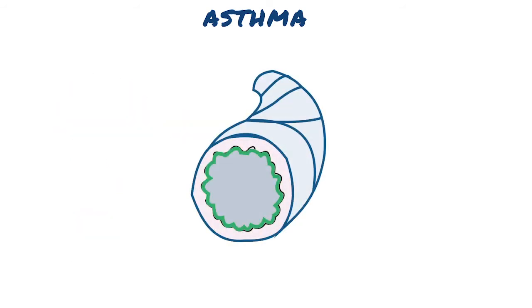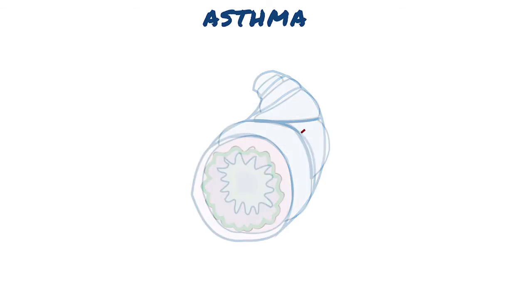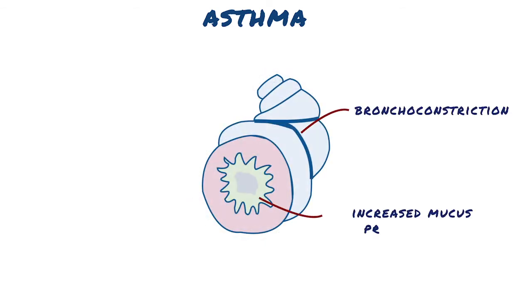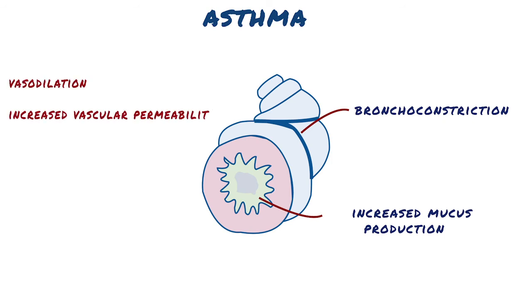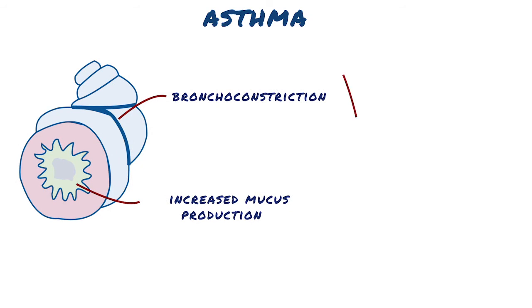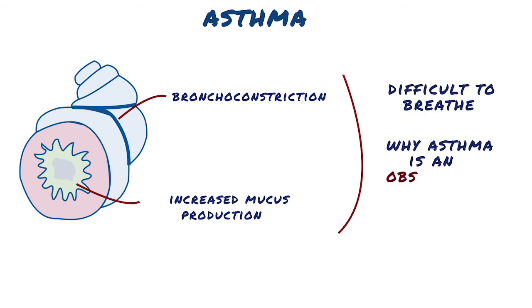The early reaction is dominated by bronchoconstriction, increased mucus production, variable degrees of vasodilation, and increased vascular permeability. This narrows the airways, making it difficult to breathe, and this is why asthma is considered to be a type of obstructive pulmonary disease.